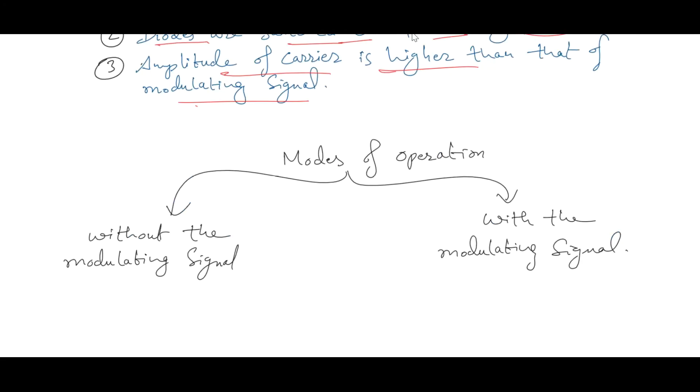To better understand circuit operation, we'll divide it into two modes. One is when no modulating signal is applied, and the second is with the modulating signal. The first mode gives the idea how the circuit operates and how the carrier is being suppressed.